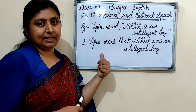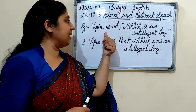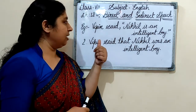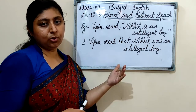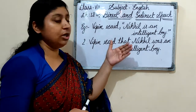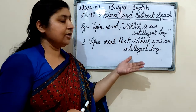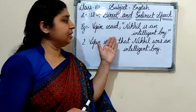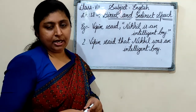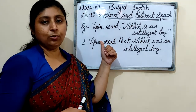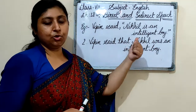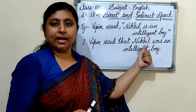Let's see the first sentence and second sentence. As you can see in the first sentence: 'Vipin said, Nikhil is an intelligent boy.' The speaker's words are reported here in two different ways. These are the exact words of the speaker, Vipin — that Nikhil is an intelligent boy. These exact words of the speaker are called Direct Speech.